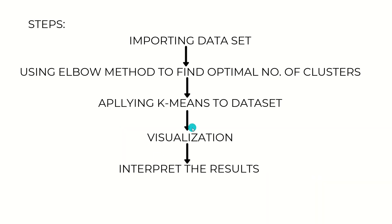What are the steps to implement k-means clustering in RStudio? We have five simple steps. First, import the dataset. Next, apply the elbow method to find the optimal number of clusters. Then apply k-means to the dataset, do the visualization, and finally interpret the results. This is how we implement k-means in RStudio.